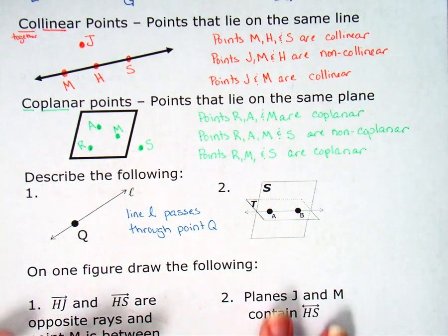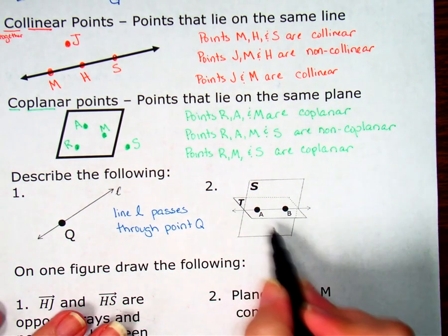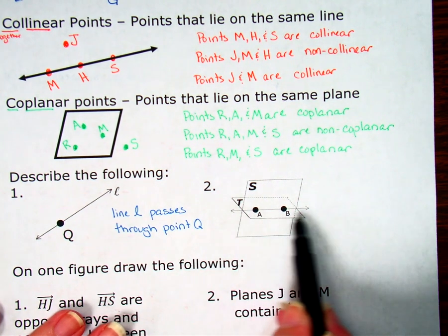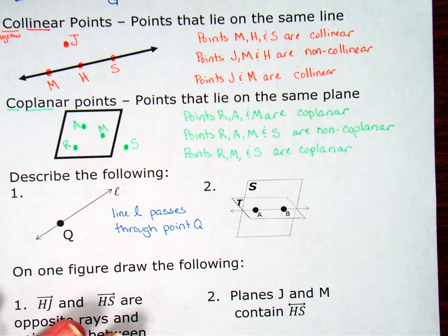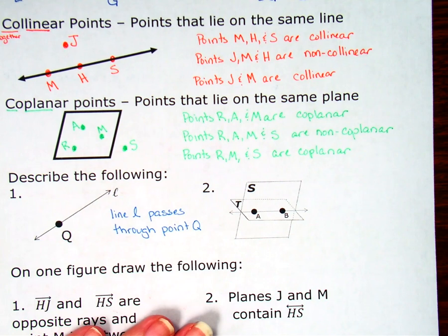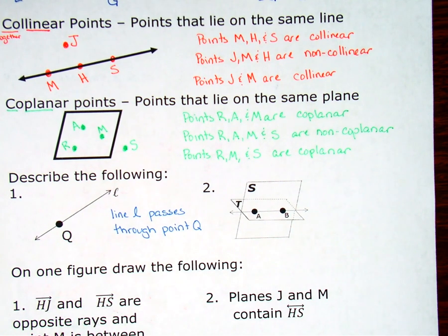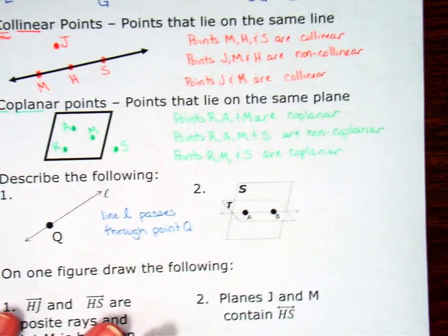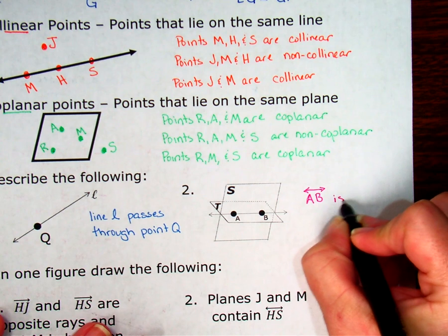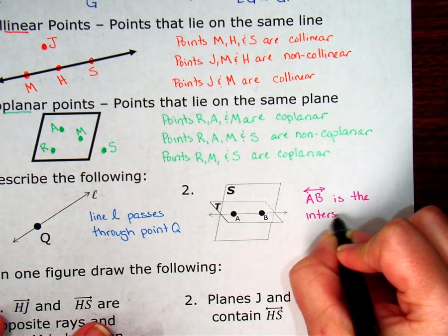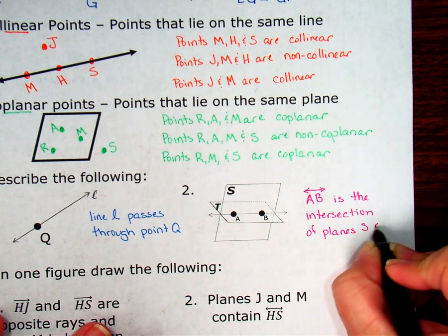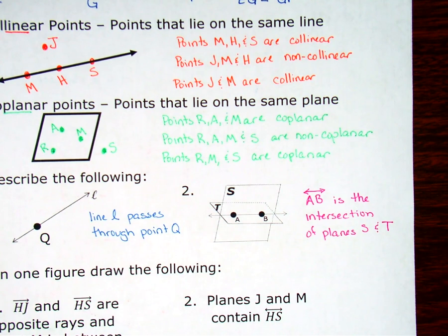When I look at number two, I can see I have two planes. I have a plane that's standing kind of up, plane S, and then I have this horizontal one that's kind of laying down, plane T. And I can see that the line that goes between them is AB. So I can see that line AB is where the two planes intersect. So I can say that a couple different ways. I could say plane S and plane T intersect at line AB, or line AB is the intersection of planes S and T. So again, more than one way to say it, they're both correct. I'm going to go with line AB is the intersection of planes S and T.